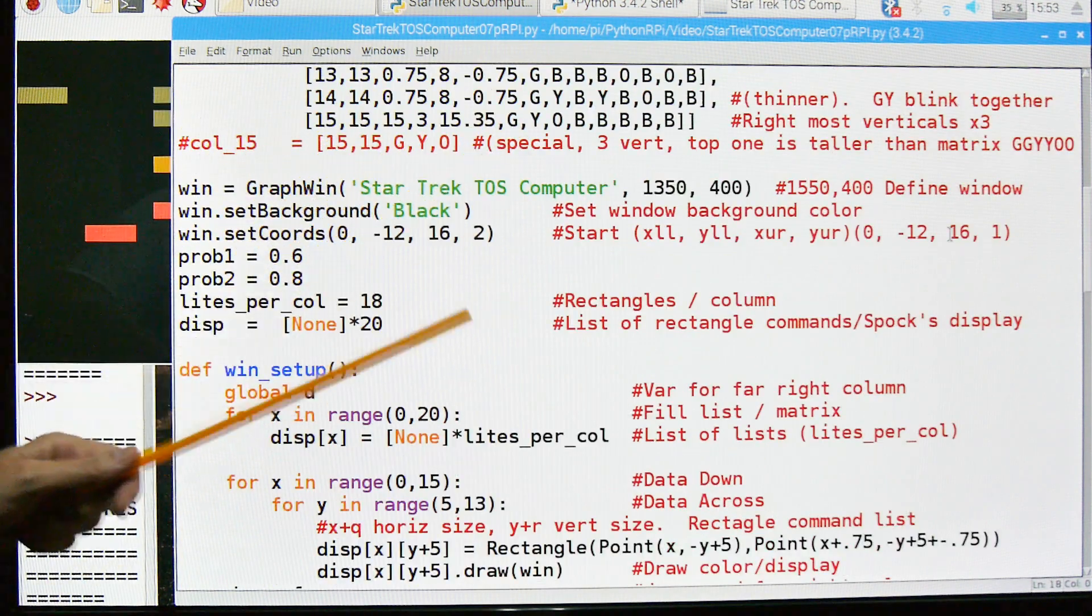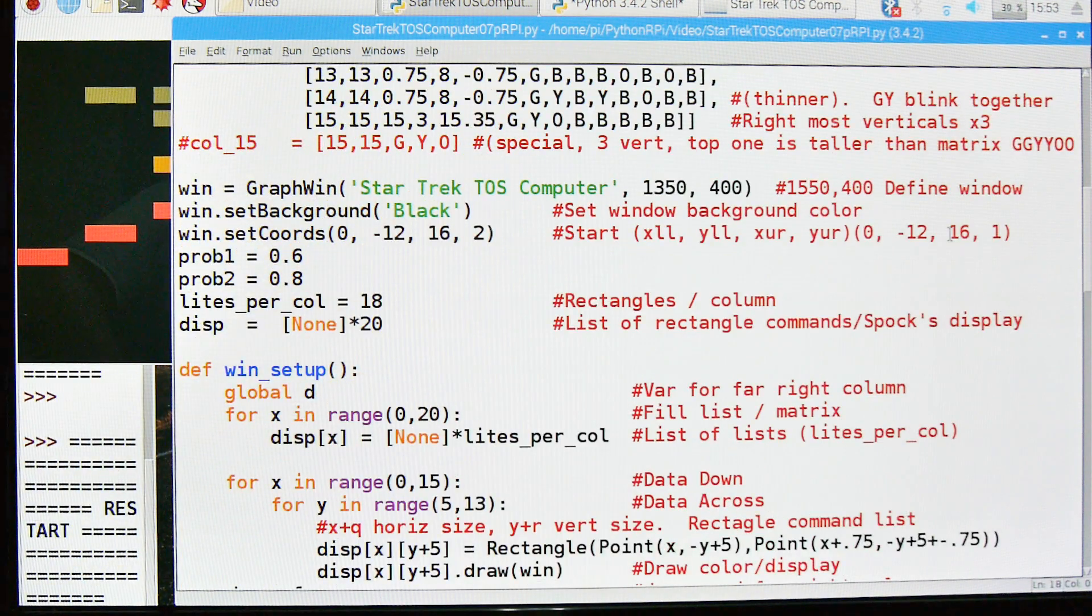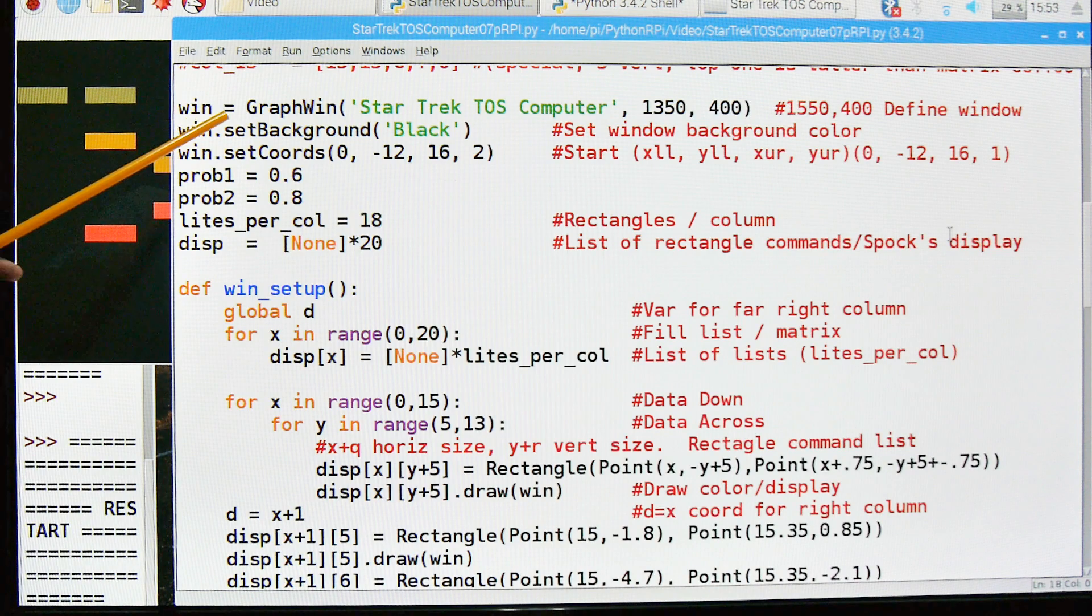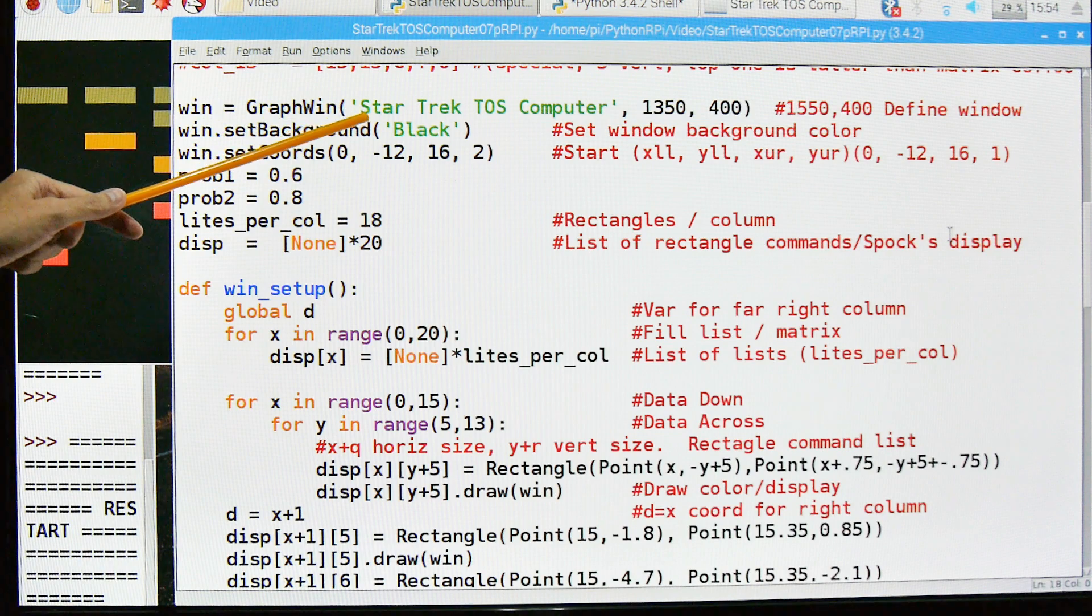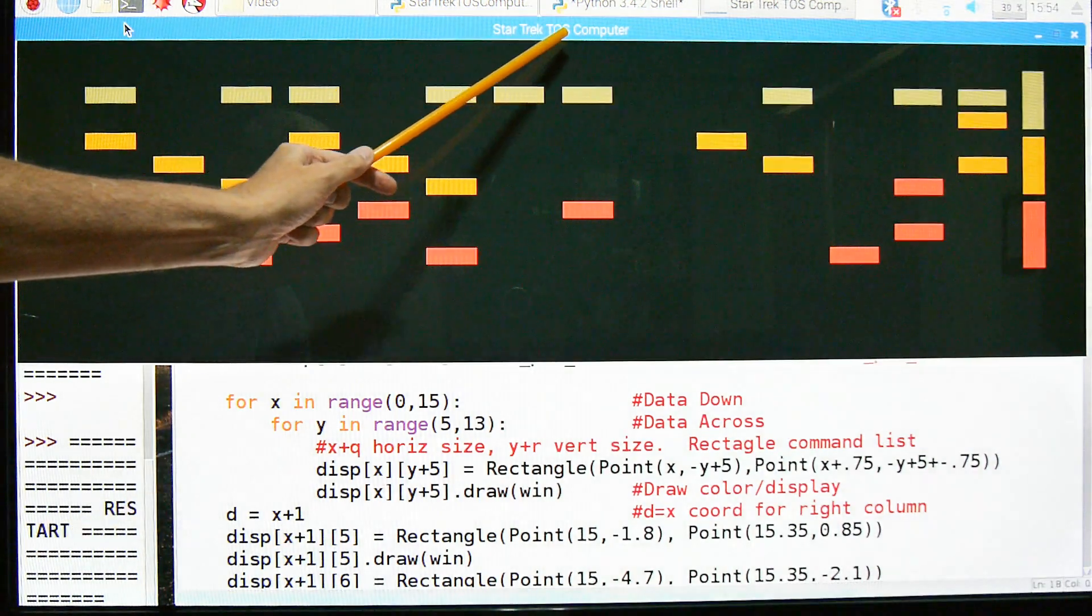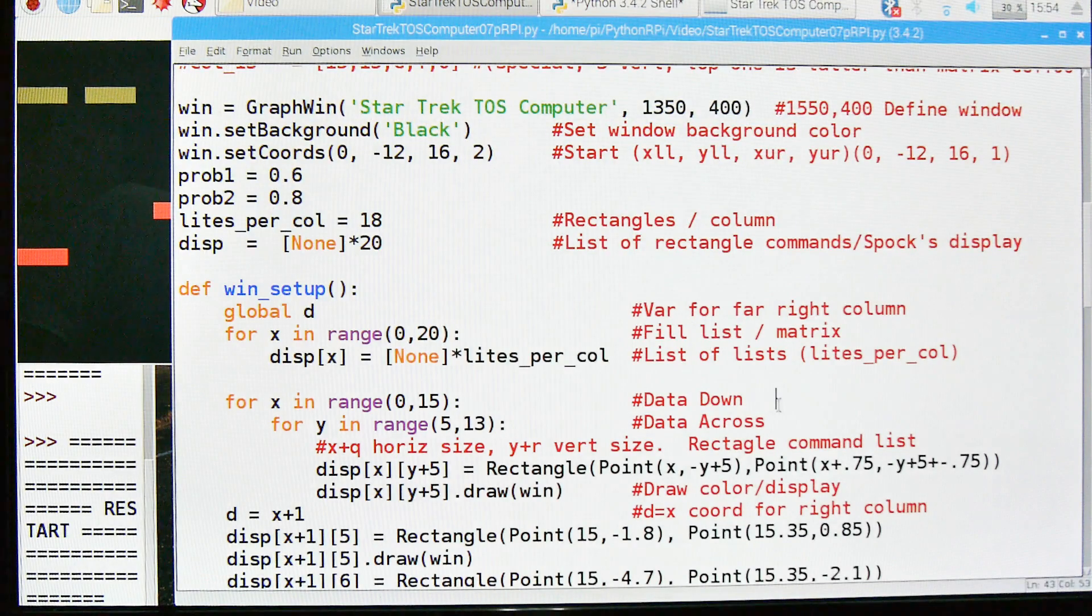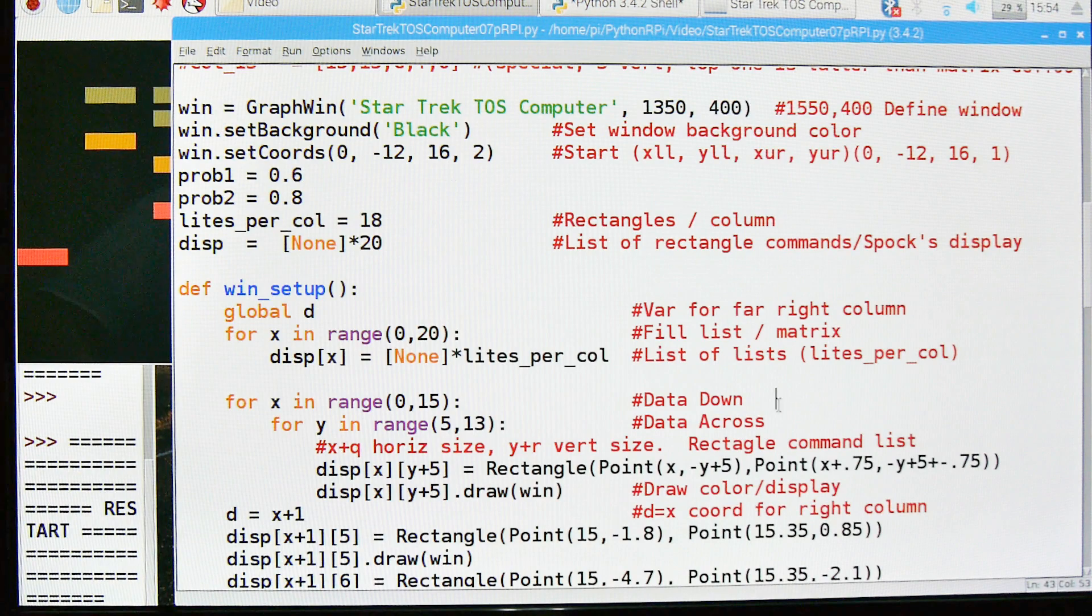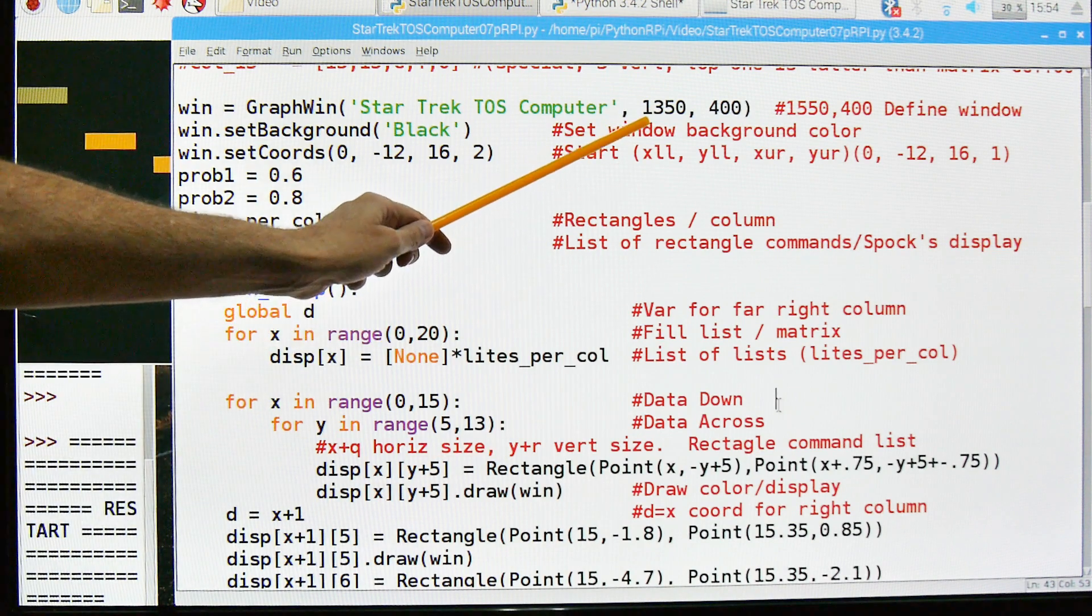Let's move down some more. This is something I'm also not using. But again, I'm thinking about changing how I do this to make it a little simpler. The first thing we're going to do is set up the window. And this is just a command from the graphics package. The title of this window is going to be called Star Trek TOS Computer. I had to change this to run this on the RPI. I'm running it on an RPI right now.